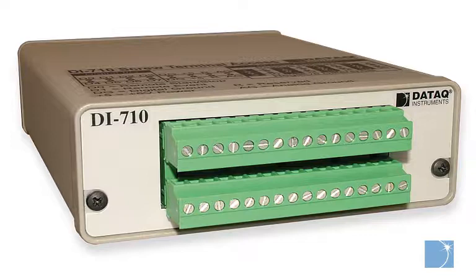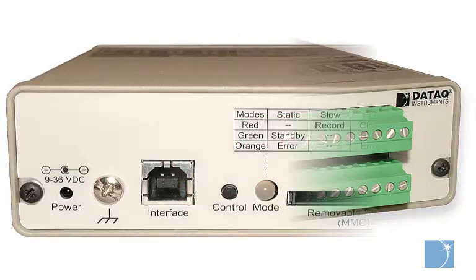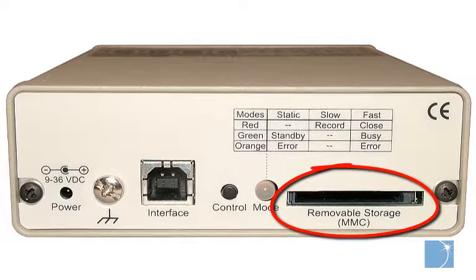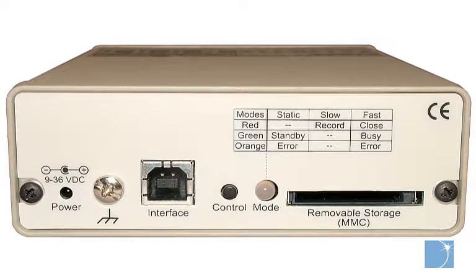Available for an additional charge, a high-speed upgrade allows you to sample at a throughput rate up to 4.8 kHz. In addition, an optional standalone feature allows you to record data to an onboard SD memory card at throughput rates up to 14.4 kHz.